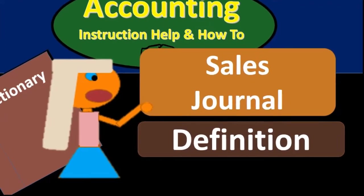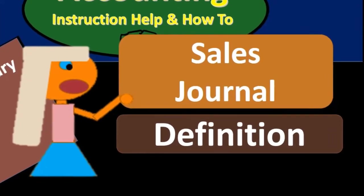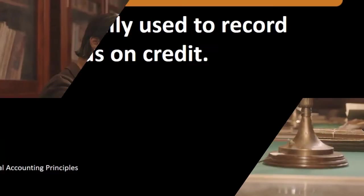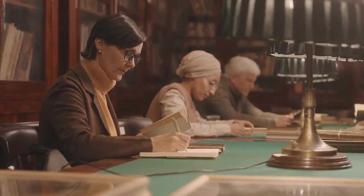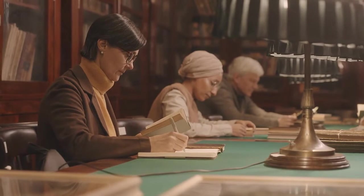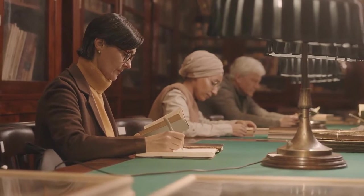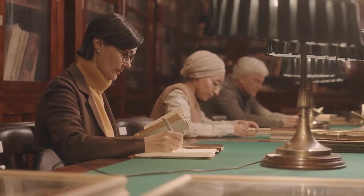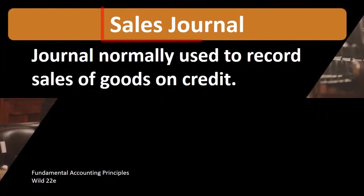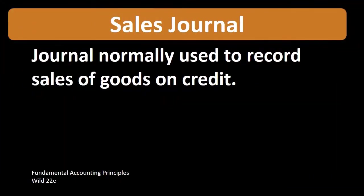Hello. In this lecture we will define sales journal. According to Fundamental Accounting Principles Wild 22nd edition, the definition of sales journal is a journal normally used to record sales of goods on credit.